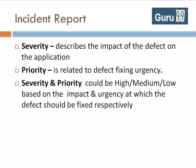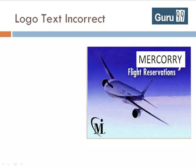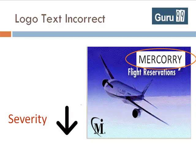A defect could have a very low severity but a high priority. For example, if there is an error in the text of the logo of a flight reservation application, its severity is low since it can be fixed very easily and it does not affect any functionality of the system. But it needs to be fixed at high priority, since you do not want to ship out your product with the incorrect logo.